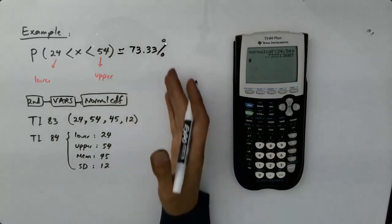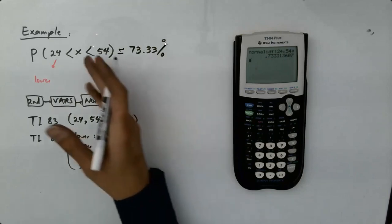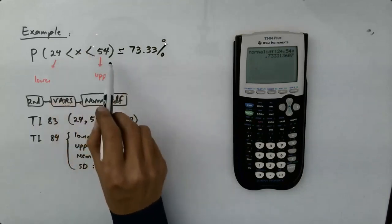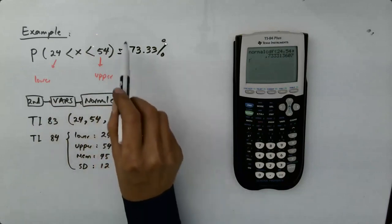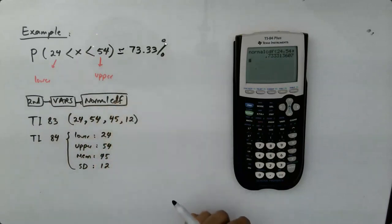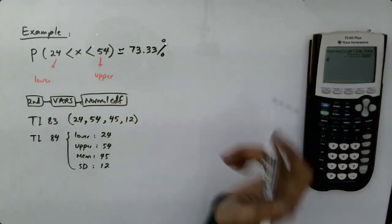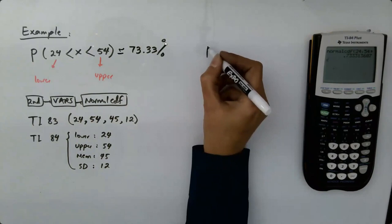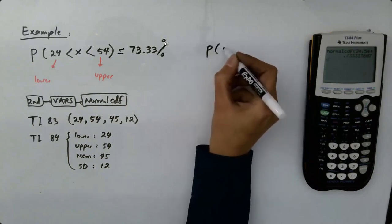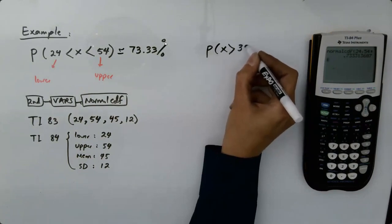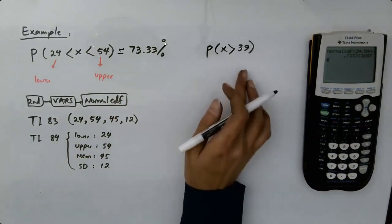So what's the meaning of that? It means that if I randomly select a shopper and that shopper spends between 24 to 54 minutes in the store, the probability is 73.33%. The second one says, now what is the probability that that random person spent more than 39 minutes in the store?